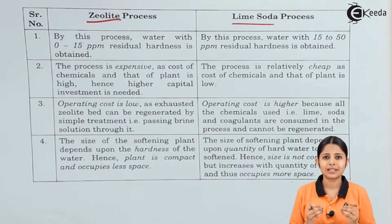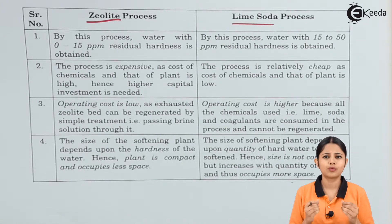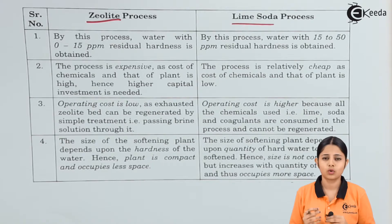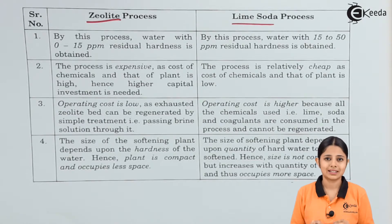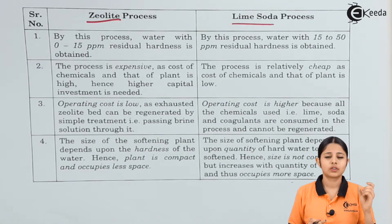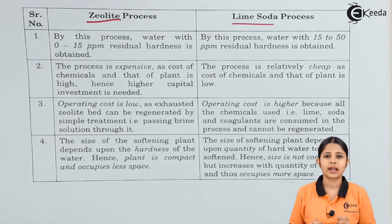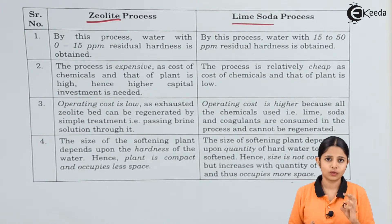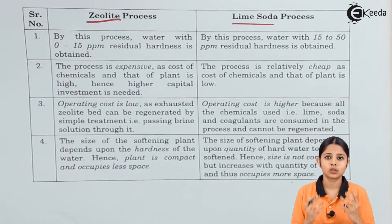Hard water is water which cannot form lather with soap, because of impurities present in it. These impurities react with soap particles and prevent lather formation. The impurities in permanent hard water are generally chlorides and sulfates of calcium and magnesium: CaCl₂, MgCl₂, CaSO₄, and MgSO₄. Because of these salts, water becomes hard and cannot form lather with soap.